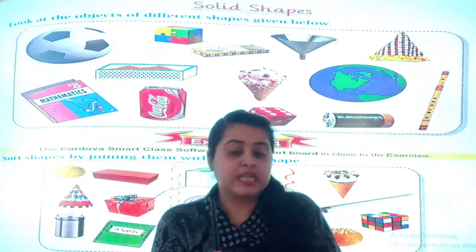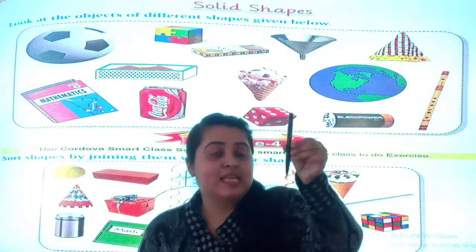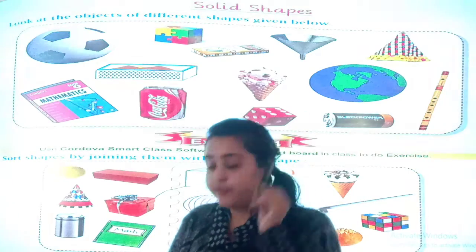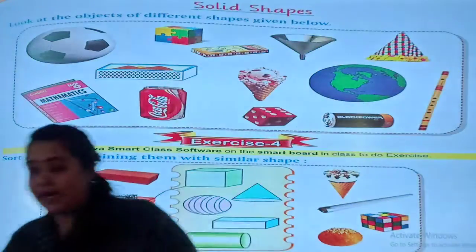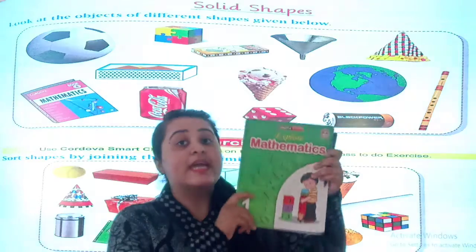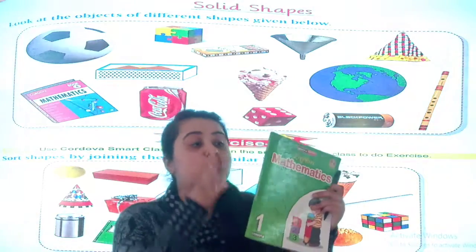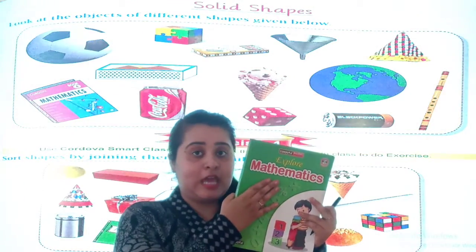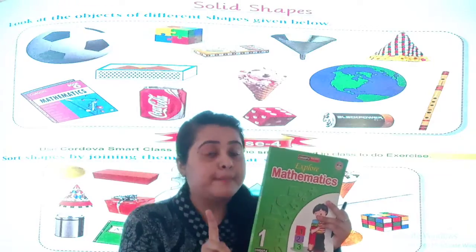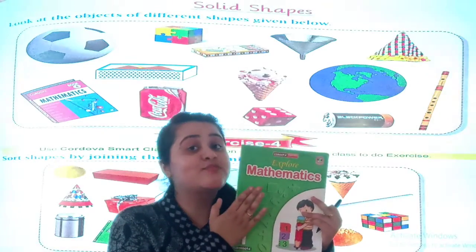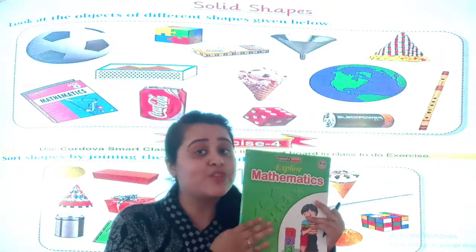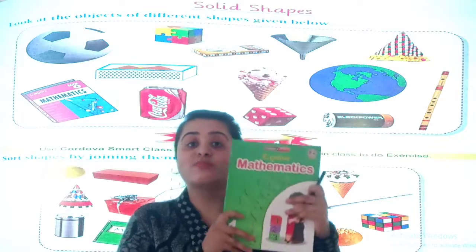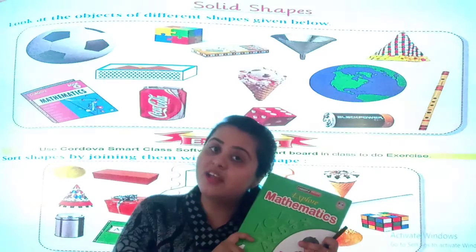So I can say that this pen is in solid shape. For example, your mathematics textbook — it is also solid in shape. Can you touch it? If you touch this book, does its shape change? No. So I can say that this book is solid in shape.